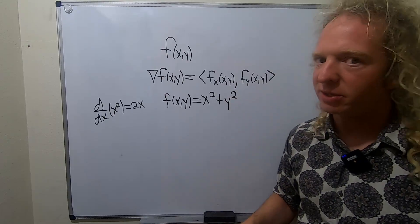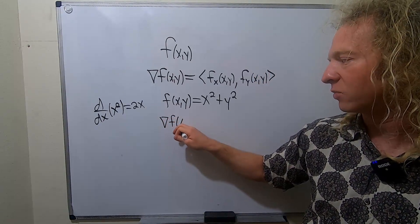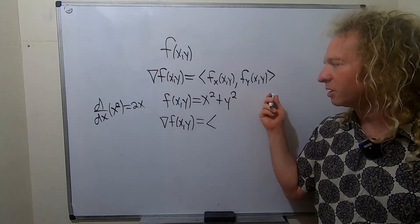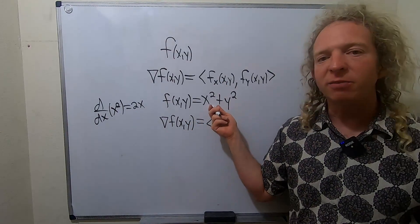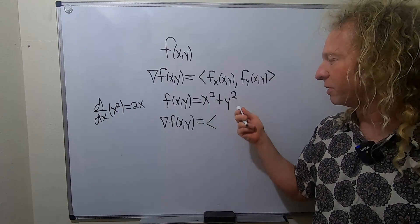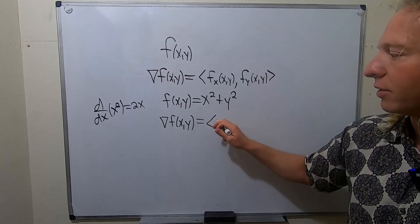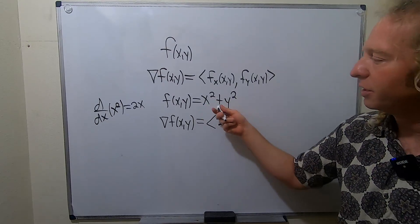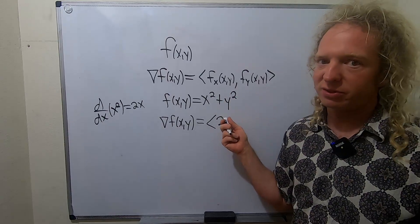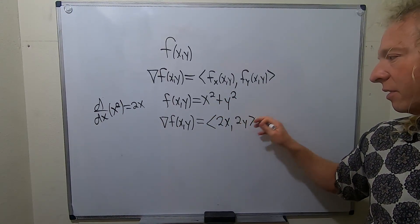So how would you find the gradient? It's really easy. The gradient of f of x, y is equal to the following vector — you just take the partials. Finding the partial derivative with respect to x gives you 2x plus 0, because you treat all the y's as constants, so you get 2x. Then taking the partial with respect to y, all the x's are constants, so you get 0 plus 2y. And that's the gradient.